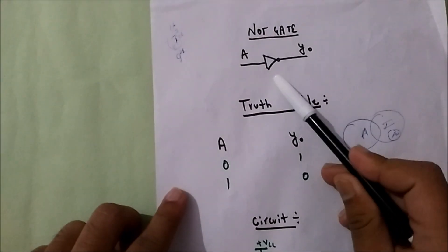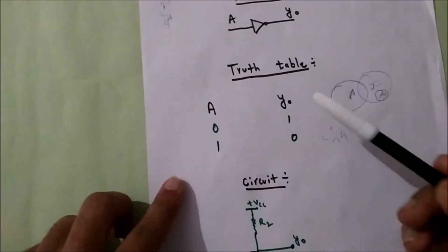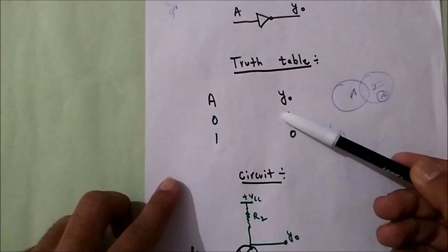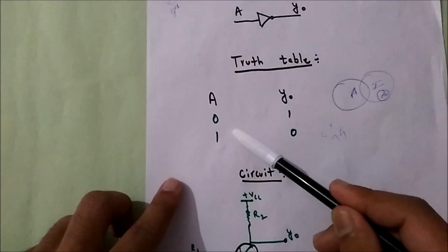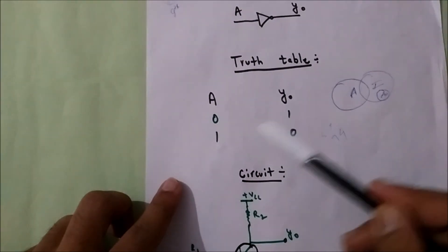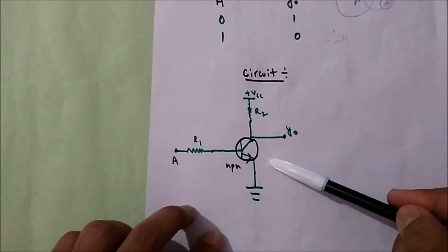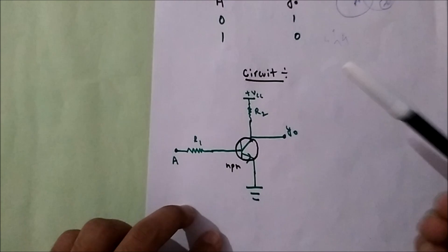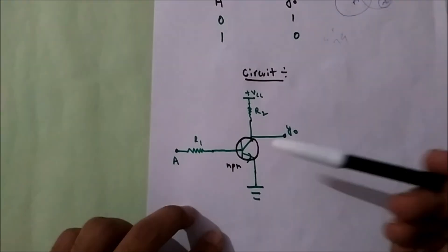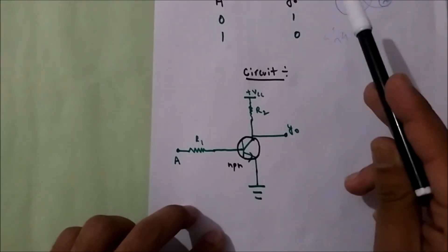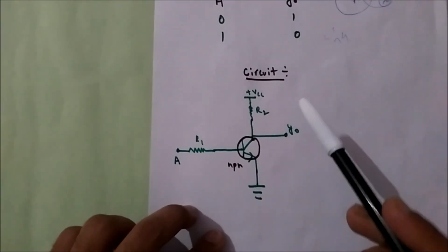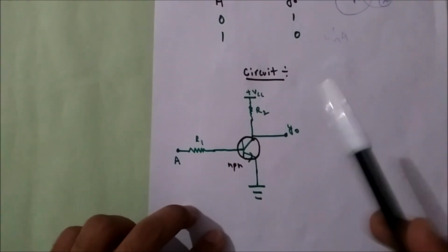This is the symbol of a NOT gate. This is the truth table: for zero we get one, and for one we get zero. Now this is a circuit. A NOT gate can be made by use of a simple transistor.